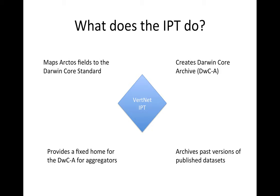Another key piece of the IPT software is that it gives each Darwin Core Archive a home on the internet — a unique and permanent URL. That is where all other aggregators, including VertNet, GBIF, iDigBio, the Consortium of Pacific Northwest Herbaria, and BARIA, as well as individual data users, can go to harvest that Darwin Core Archive and add it to their index. This means portals don't have to connect to Arctos directly, which would cause security and safety issues. The IPT creates a Darwin Core Archive at a unique permanent web address and all portals go there to download your data.